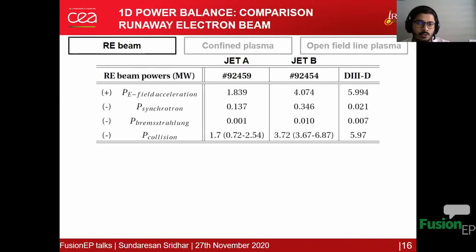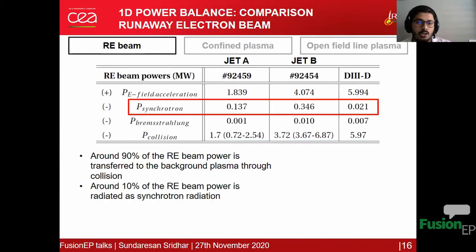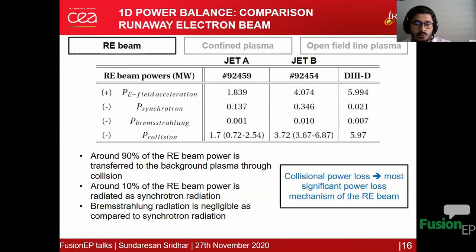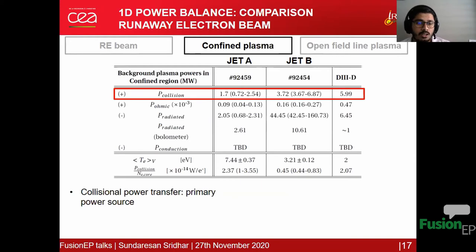For the runaway electron beam system, almost 90% of the runaway beam power is lost through collisions transferred to the background plasma, and about 10% is radiated as synchrotron radiation; bremsstrahlung radiation is very small compared to synchrotron. We conclude that collisional power loss from the runaway electrons is the most significant power loss term compared to synchrotron radiation.